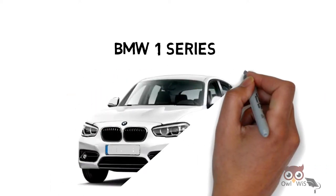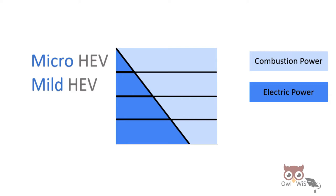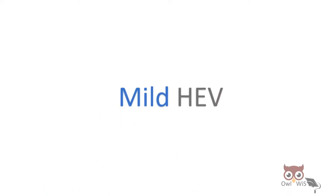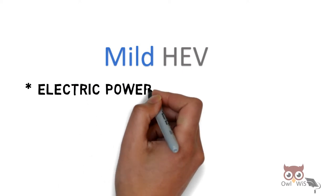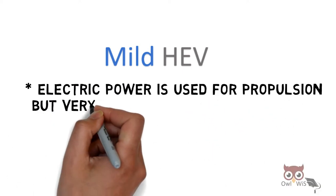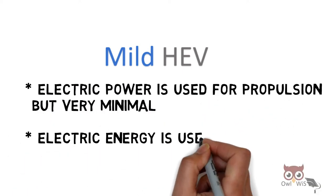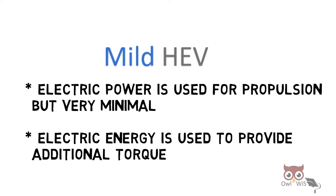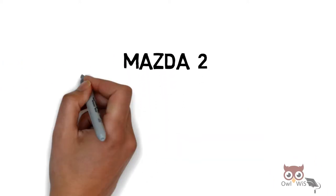Next is mild HEV. As you can see, the electric power used here is very minimal. Also, electric energy is used to provide additional torque. Mazda 2 is an example.